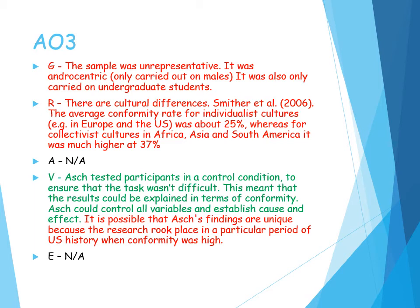Due to the strict control of the artificial environment it has high internal validity. However, it is an artificial task — judging line length isn't something you would do in everyday life — so it lacks mundane realism. Would it really apply to and explain everyday conformity and normative social influence in everyday settings? It could also lack temporal validity as it may be a child of its time — it took place during a period when conformity rates were high in America during the McCarthy era, so would the same findings be found if replicated today? Regarding ethical issues, participants were deceived, though they had to be deceived — if told the true nature of the task it might have affected the accuracy of results and could lead to demand characteristics.